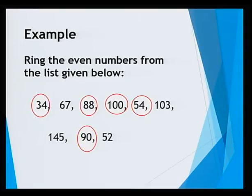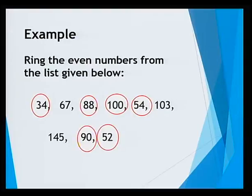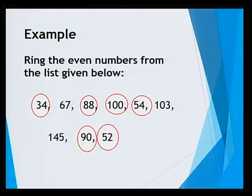90 ends with 0 and is an even number. Similarly, 52 is an even number because it ends with 2. So what we have learned is that even numbers are either exactly divisible by 2, or they end with 0, 2, 4, 6, and 8.